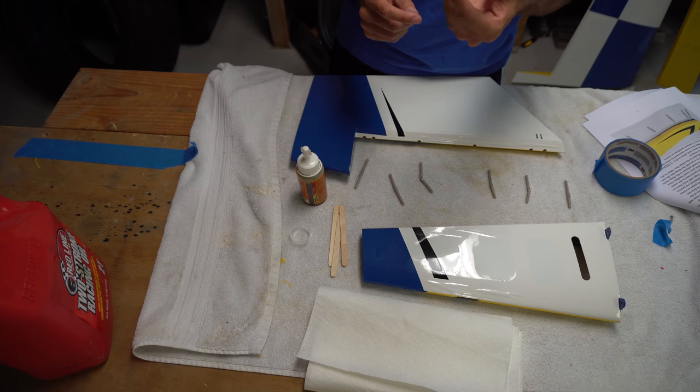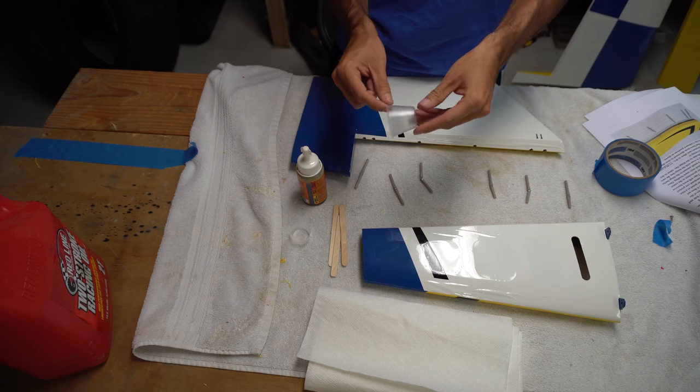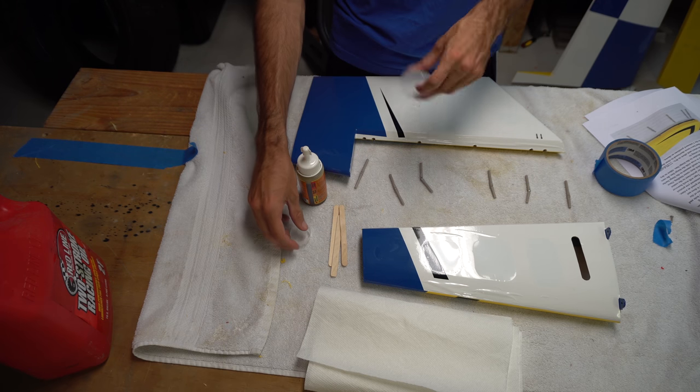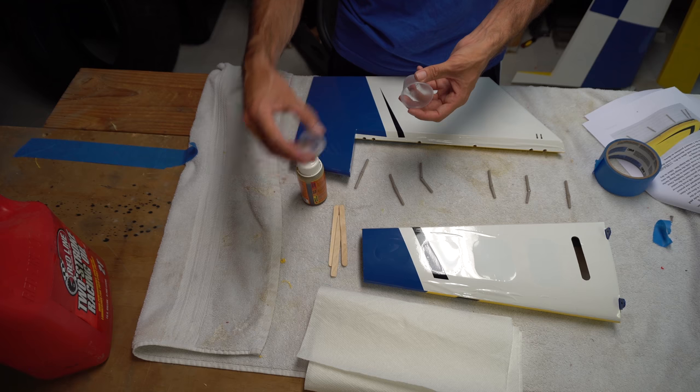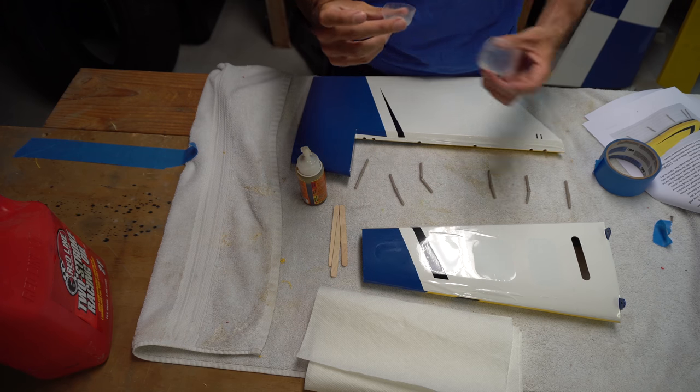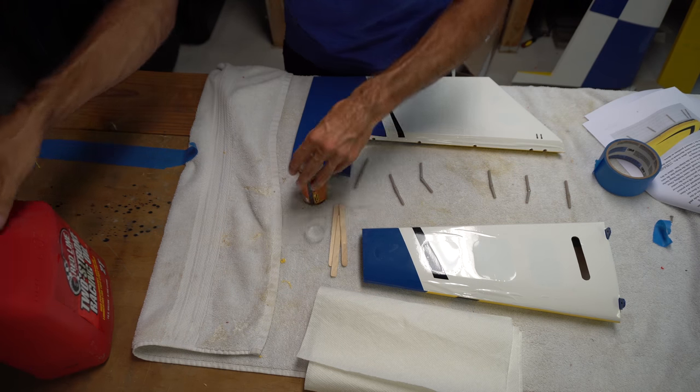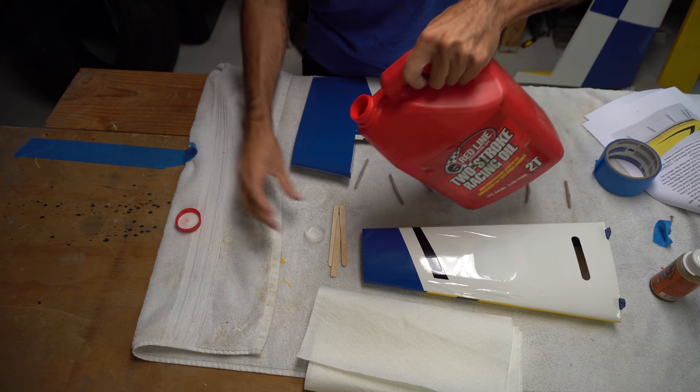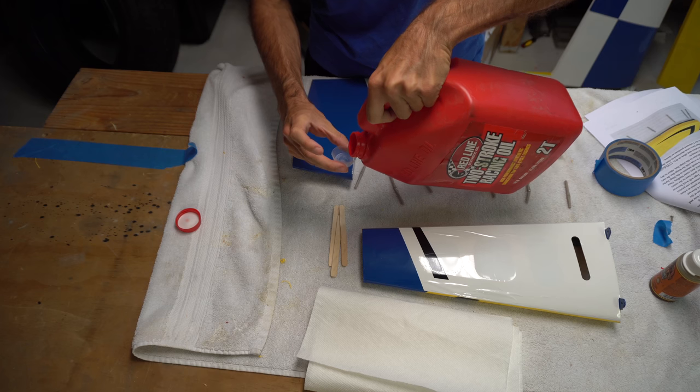As you can see here, I just laid a blue piece of tape down. Let's just put the Gorilla Glue on in order to spread the glue around the hinge. The next step, as you see what I'm doing here, is showing a cup that I used. This is an epoxy mixing cup that I've cut down in half and I'm going to pour some red line oil in this cup.